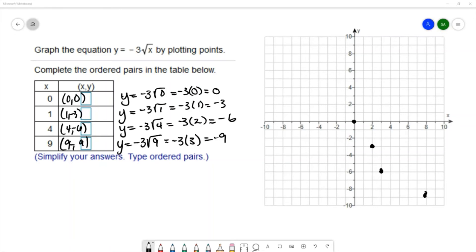I just noticed that I plotted the second point in the wrong spot. I plotted it at 2, negative 3, instead of 1, negative 3, so I'm correcting that. And then I will connect these points, and we get a graph that looks something like this.